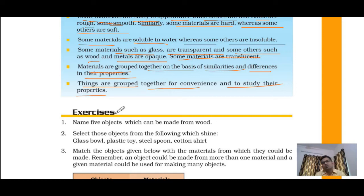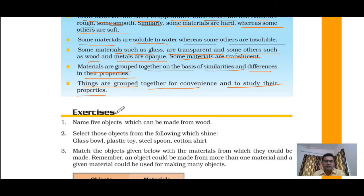The main purpose of grouping is convenience — to make our work easy and to save time. Just like a shopkeeper arranges items in different sections, we sort materials and put different items in separate boxes. That is the main idea of this chapter — sorting is done for our convenience. I hope this point is now clear to you all.